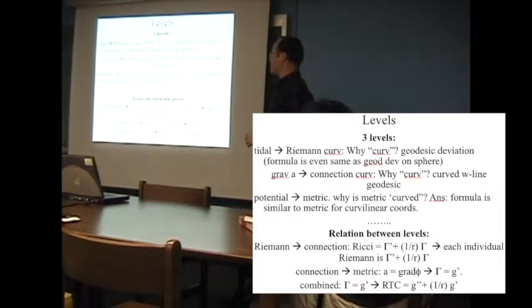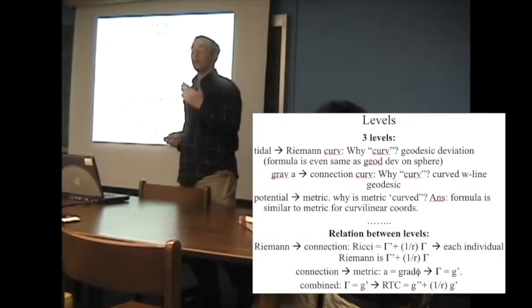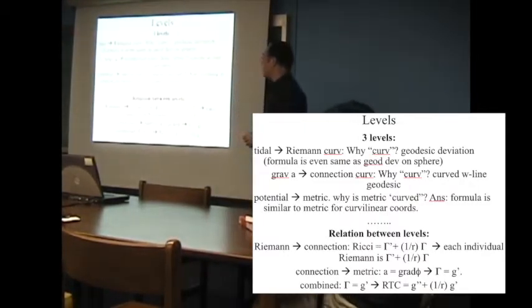Now, what is the relationship between the connection and the metric? We know that the Riemann is related to the connection in this way. Each Riemann has this structure. If you sum the Riemanns, you get this. We know that there's a connection, but how do you get the connection given the metric? Again, you have these three levels. How do you get the connection given the metric? The answer is given to us by this formula.